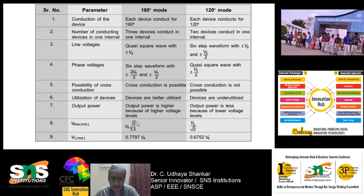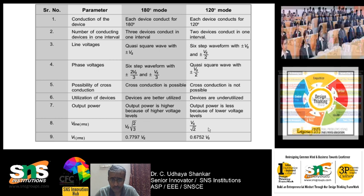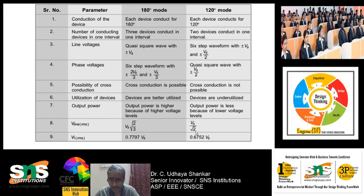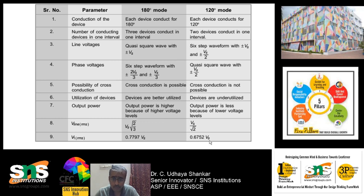The line RMS voltage in 180-degree mode is V_S × √(2/3), giving 0.7797 × V_S. In 120-degree mode it is V_S/√2, giving 0.6752 × V_S. To achieve the same output power in 120-degree mode, you have to go for higher-rating transistors.